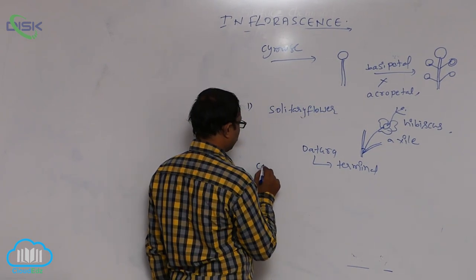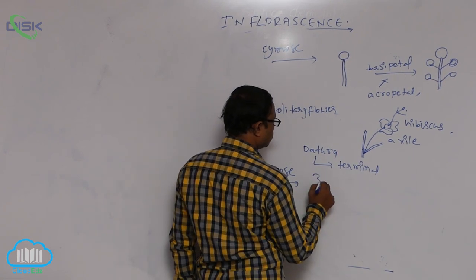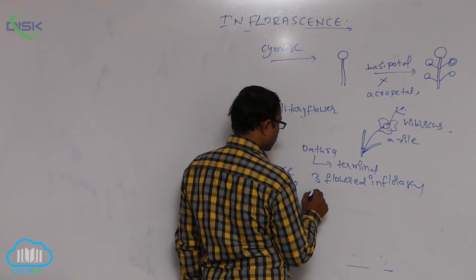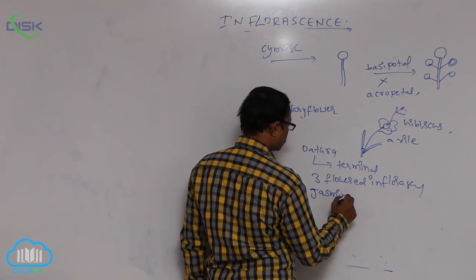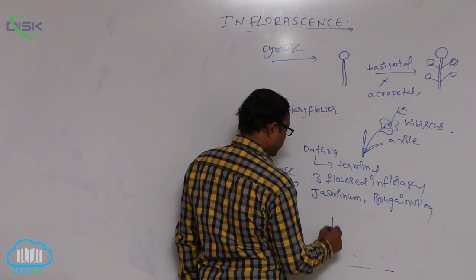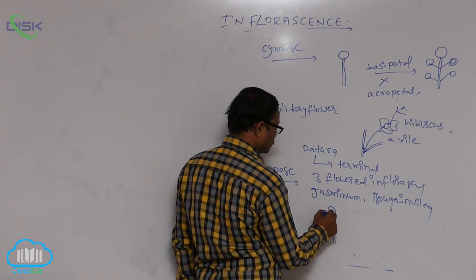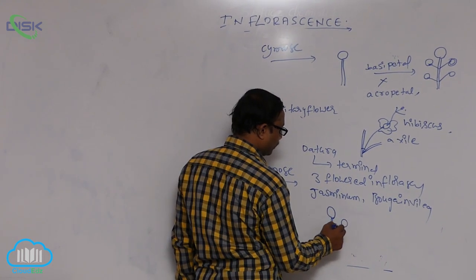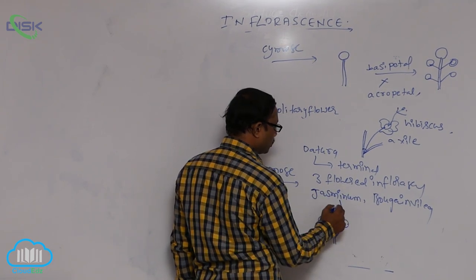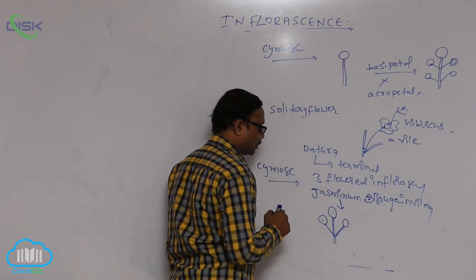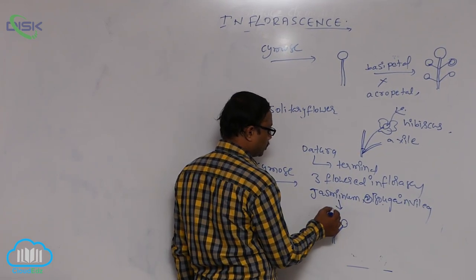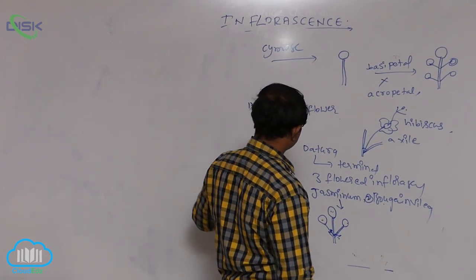After that, three-flowered inflorescence — simos (cymose). Simos means three-flowered inflorescence. Examples are Jasminum and Bougainvillea (paper plant). At the tip of the peduncle, a flower is produced, and below that, the pedicel has two more flowers — that is known as three-flowered inflorescence, the simos. Basipetal arrangement: above is large, below is small. That is known as simos inflorescence.